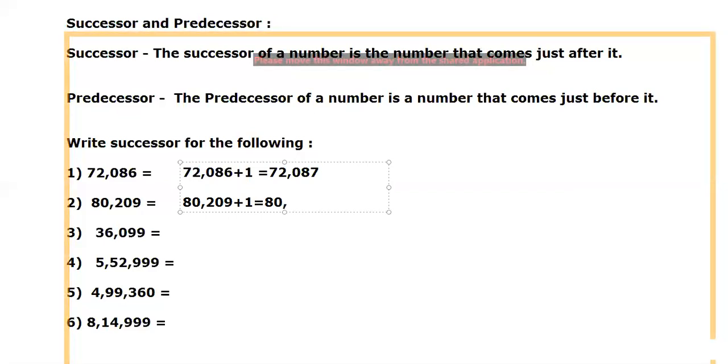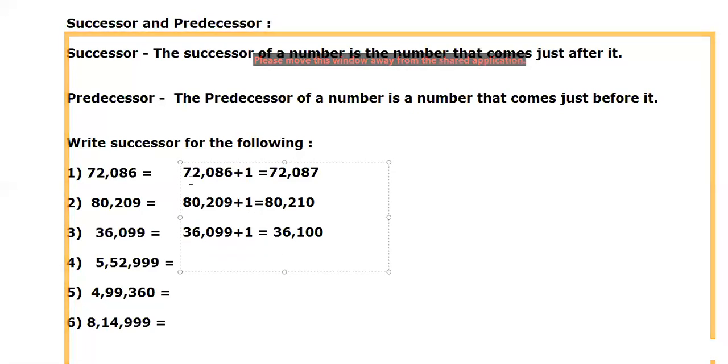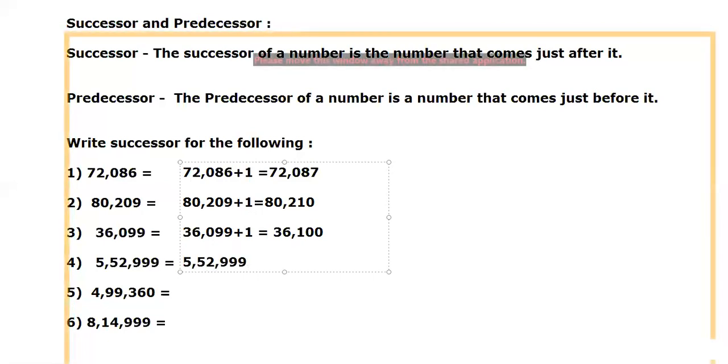Now in the same way, 36,099 plus one. What will happen? 36,000. After 99, what will come? Remember children, whenever you are getting nine, what will happen? You have to consider the previous digit also. Then only we can easily get it. So 36,000, after 99, 100 will come. So 36,100.